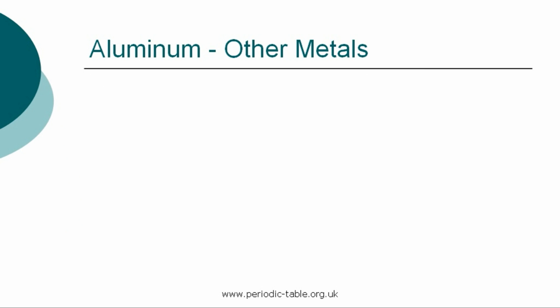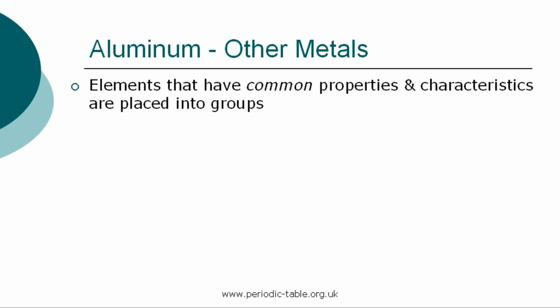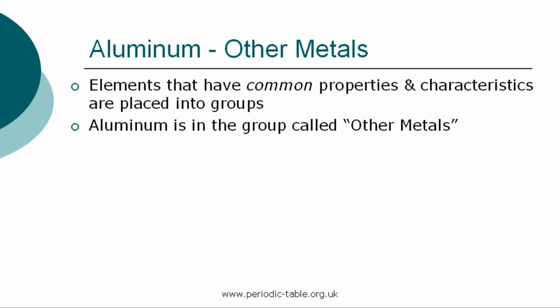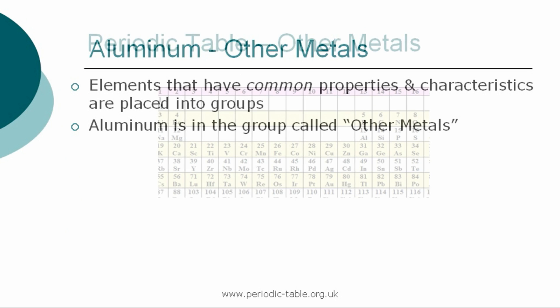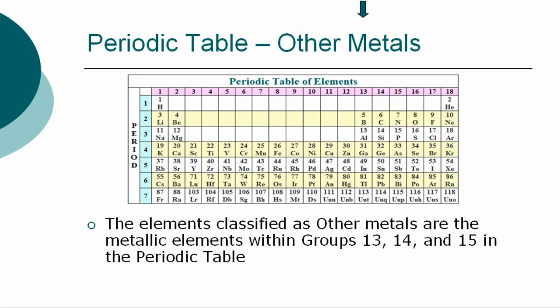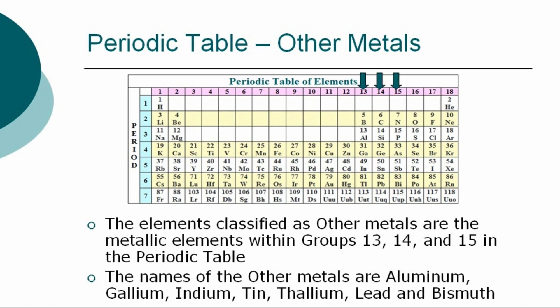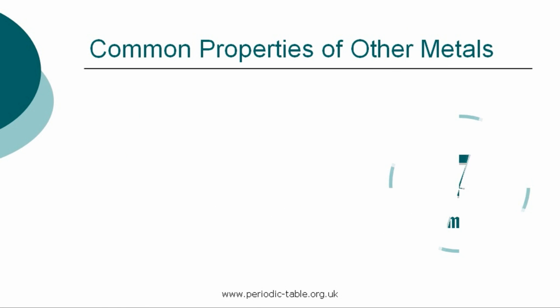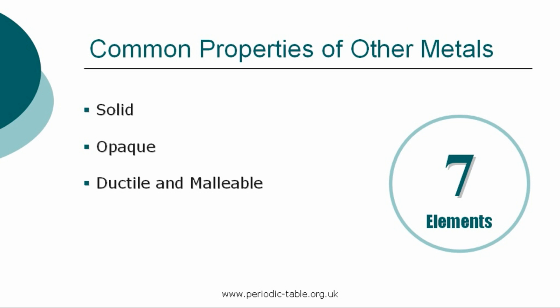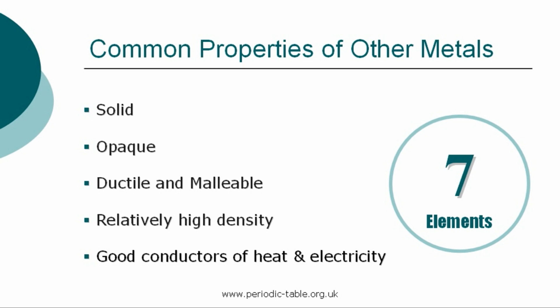Once the properties of an individual element have been identified, it is placed into a group of elements which have common properties and characteristics. Aluminum is in the group called the other metals. The seven elements classified as other metals are the metallic elements within groups 13, 14, and 15 in the periodic table. The names of the other metals are aluminum, gallium, indium, tin, thallium, lead, and bismuth. The other metals are solid, opaque, ductile, and malleable. They are also good conductors of both electricity and heat and have a relatively high density.